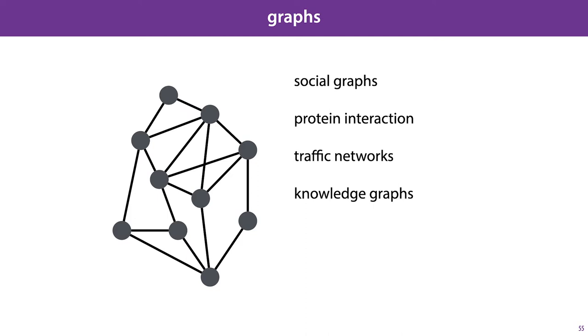Protein interaction graphs, where the nodes are proteins in cells and the links indicate that these proteins interact in a meaningful way. Traffic networks, where the links are roads and the nodes are intersections. Or knowledge graphs, which capture a variety of heterogeneous knowledge, of which we'll see an example later.